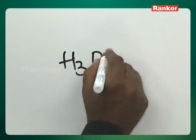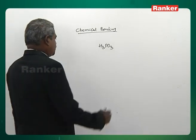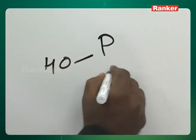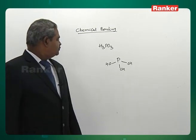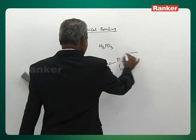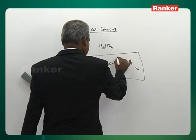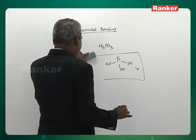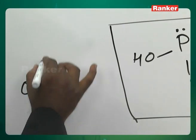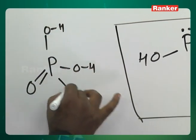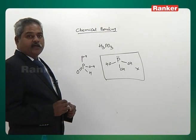Why is H3PO3 an exception? If we write three OH groups for three hydrogens, phosphorus forms three bonds and is left with a lone pair. To avoid that lone pair, we change the structure: P double bond O, plus two OH groups plus one H directly bonded to phosphorus, giving phosphorus tetrahedral geometry and getting rid of its lone pair.